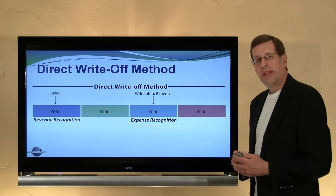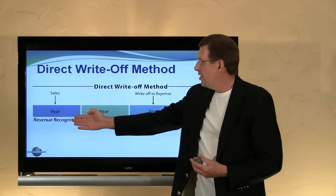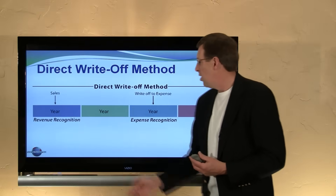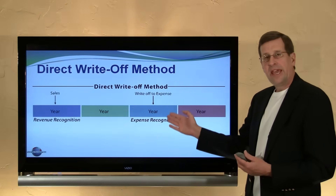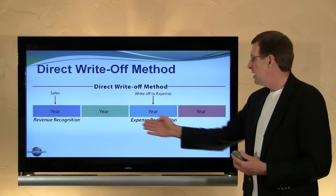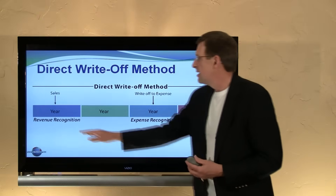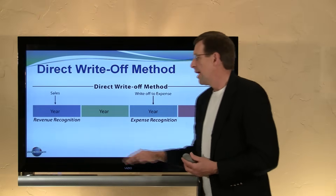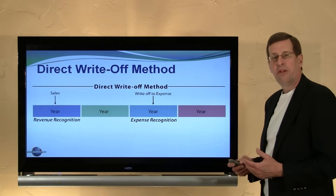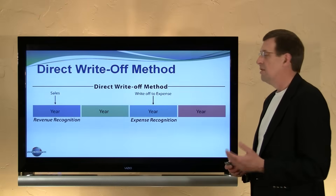Here's an example that illustrates. We have the sale and the revenue recognition in, say, year one. Perhaps we don't write off the account until year three, sometimes later — that's when the expense is recorded. Hence, revenue recognition in one period, expense recognition in another period. A poor matching results.